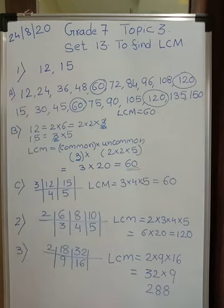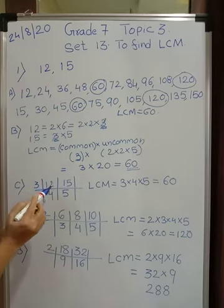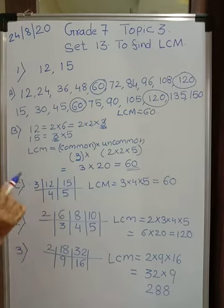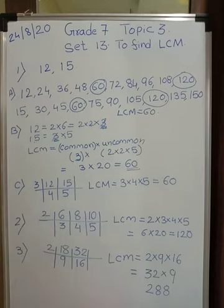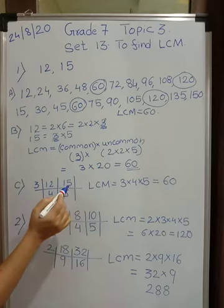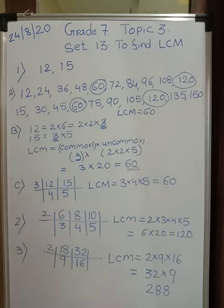That is the second method. Now the third method, which is a little easier. We have done HCF in a similar way. In Method C, write 12 and 15, then start with the lowest prime number which divides both numbers completely. 3 divides 12 giving 4, and 3 divides 15 giving 5. Note: I can't take 2 because 15 is not divisible by 2, so I take 3.